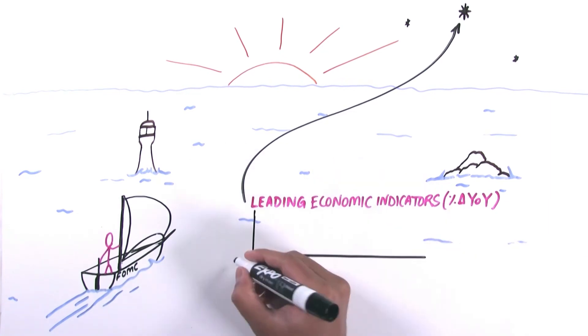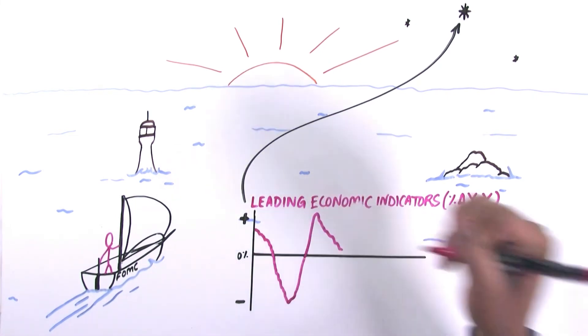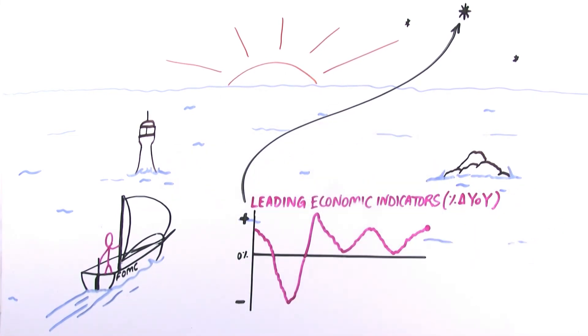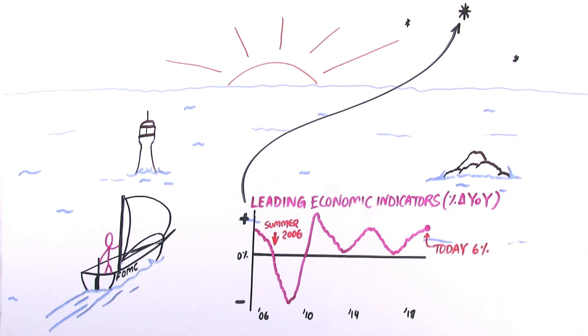Typically, if a recession is around the corner, that index is contracting year on year. And in fact, in the summer of 2006, the Leading Economic Indicators dipped into contractionary territory, corroborating the yield curve's message from earlier that year. Where is the Leading Economic Indicator Index today? It's up 6% year on year in positive territory and not signaling a recession in the near future.